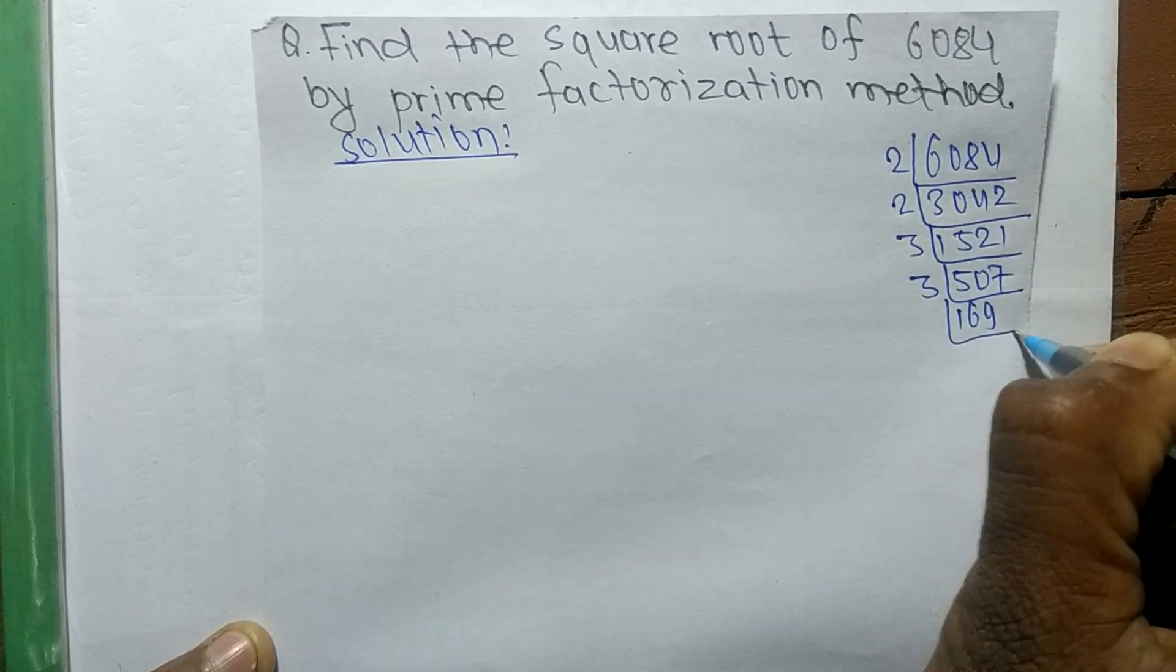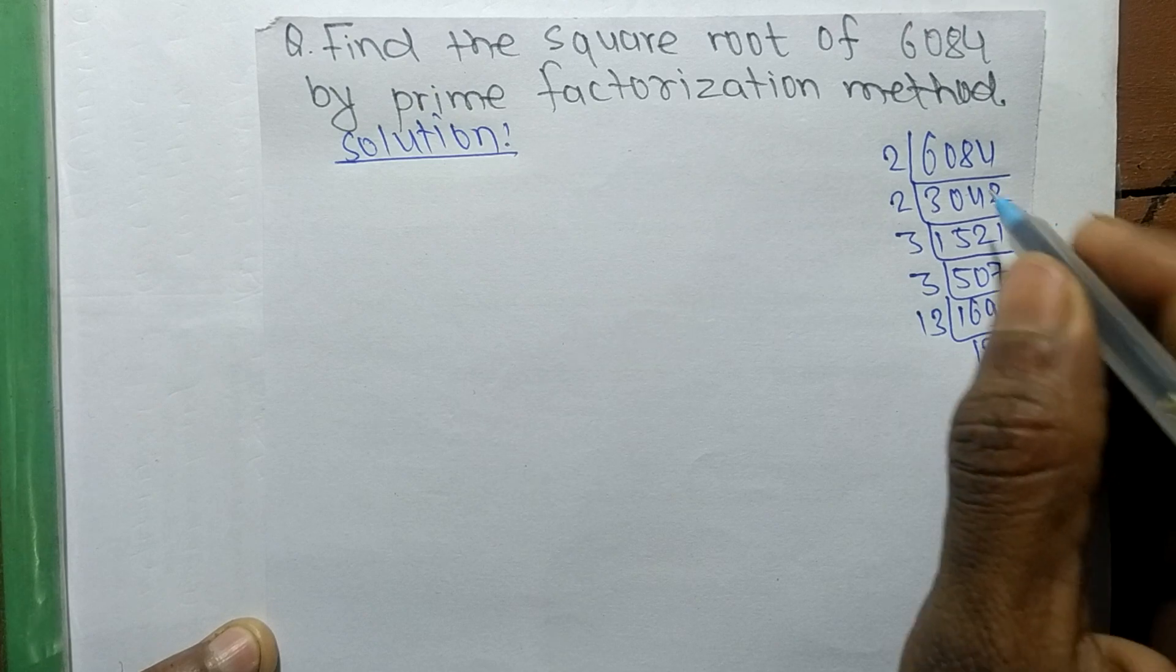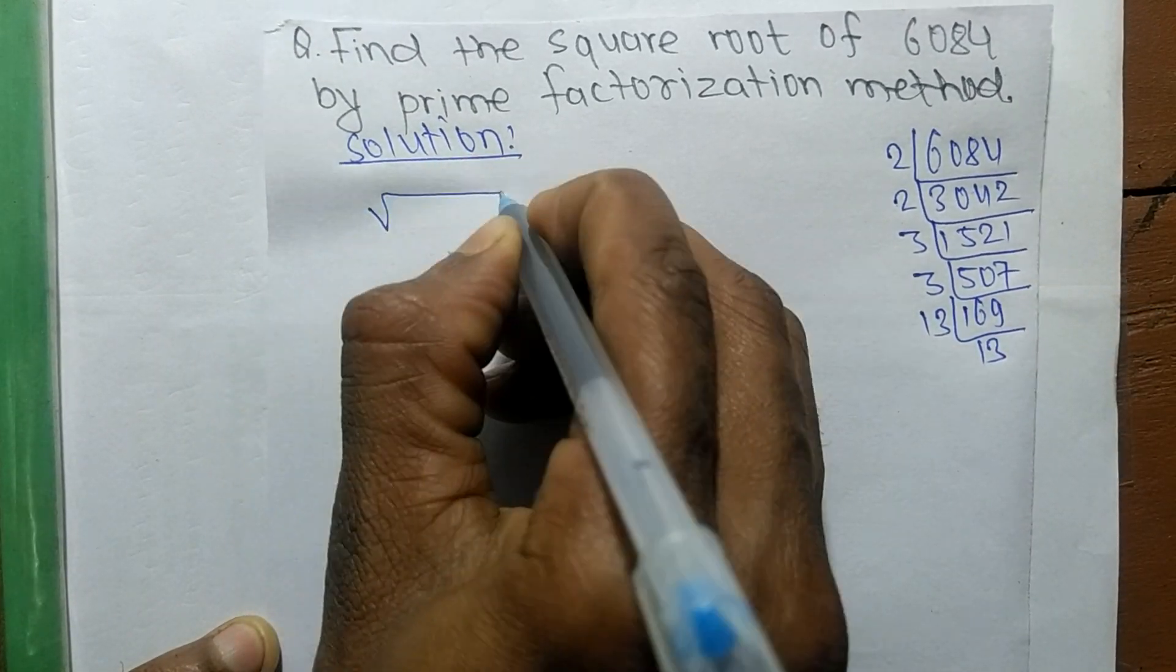...divides 507 to get 169. So it is 13 times 13. After finding prime factors, now we find out the square root of 6084.